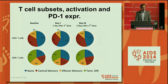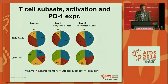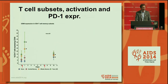We studied whether romidepsin had any impact on the distribution of subsets in CD4 and CD8 T cells. We saw a shift towards a larger proportion of naive cells and a smaller proportion of effector memory and central memory cells in both compartments. This was detectable one day after the infusion but had reverted back to baseline after 10 days. We also measured CD69 as a marker of CD4 T cell activation and found a significant increase — almost a doubling — in the proportion of activated cells in the terminally differentiated memory compartment, also reverting to normal within 10 days.